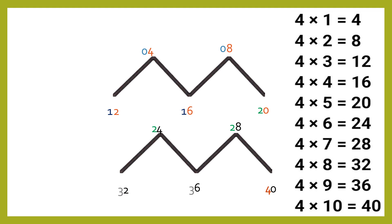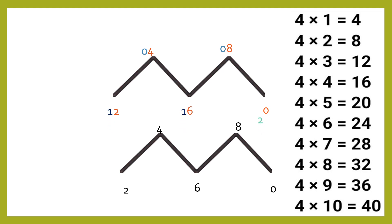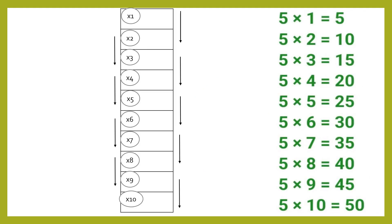So odd number one is placed two times, two is an even number so it is placed three times, then three is an odd number placed two times, and accordingly the sequence will continue. Here is the table of four and the pattern. For the table of five, on the unit place we put five followed by zero and the same sequence will continue. For odd multipliers the unit place will have five, and for even multipliers the unit place will have zero.